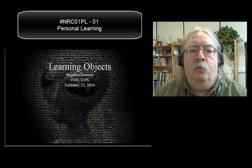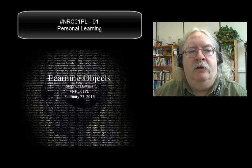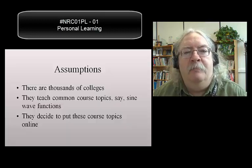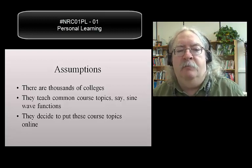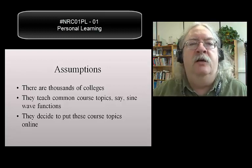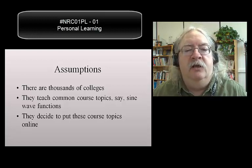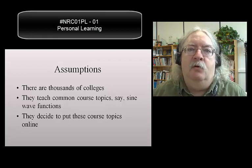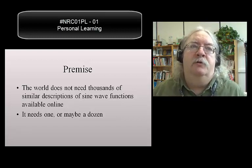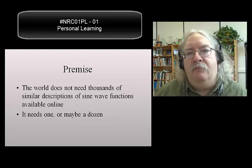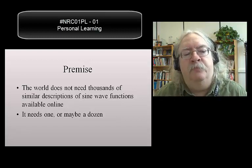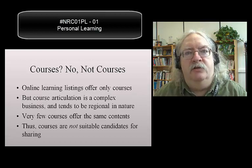Because a lot of what we know today about learning objects, about online learning, has to do with some of the core ideas that people came up with back then. There were a lot of assumptions being made — assumptions along the lines of: there are many courses, many institutions, and we can achieve efficiencies by digitizing courses and having common courses taught to many people at once. The premise was that the world does not need a new description of sine wave functions created a thousand times anew every September by hundreds of thousands of individual instructors.